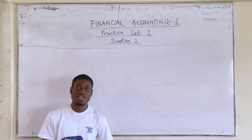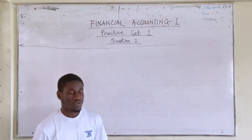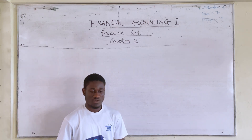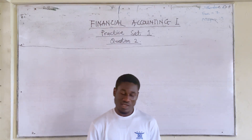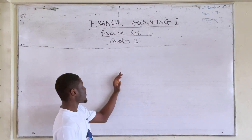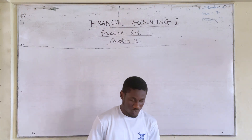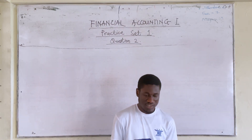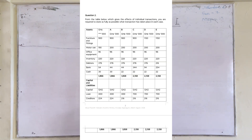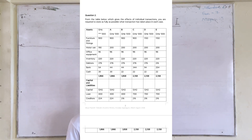Hello everyone, my name is Maye Tahedit and you are welcome to The Day Teacher. Today we are going to look at the second example under accounting equation — we are going to solve another practical example. We have a question here, and it says from the table below which gives the effects of the individual transactions, you are required to state as freely as possible what transaction has taken place in each case.